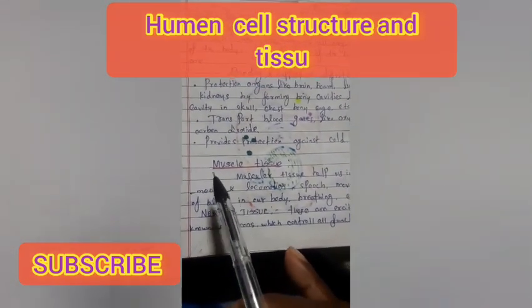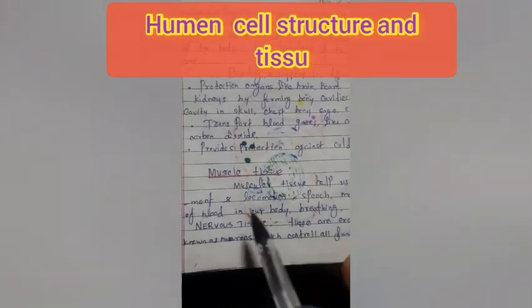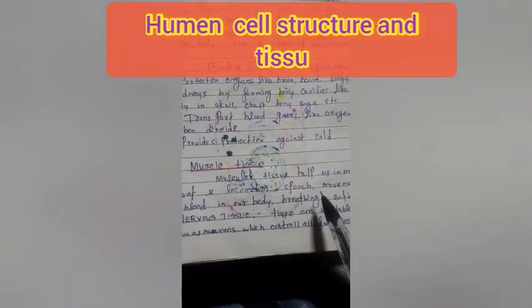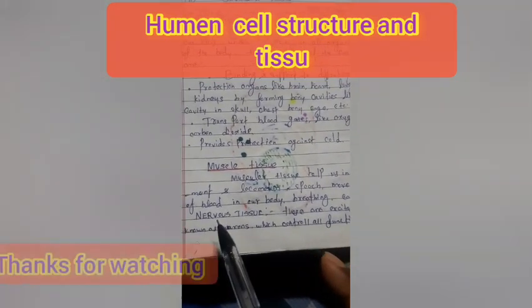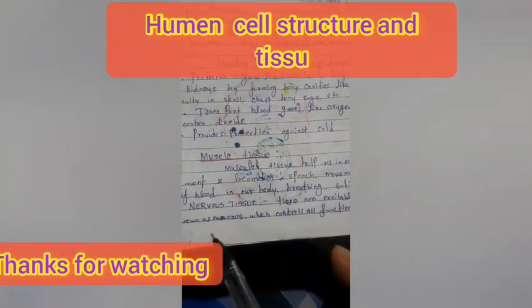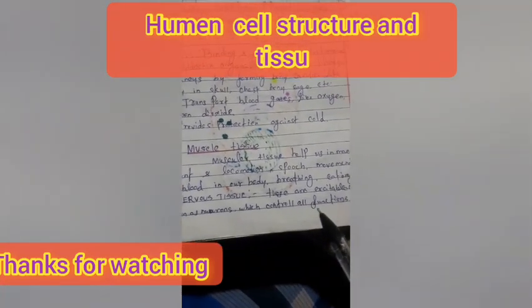Number 3: Muscle tissue. Muscle tissue helps in movement and locomotion, speech, movement of blood in our body, breathing, and heartbeat. Number 4: Nervous tissue. They are excitable cells known as neurons, which control all functions.